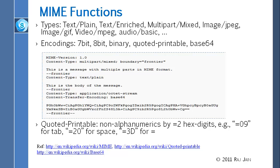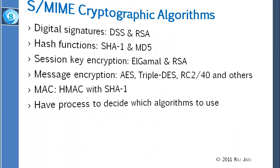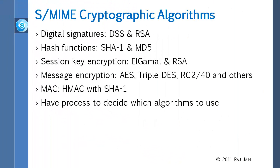Many of you have saved webpages as MHTML. MHTML is basically MIME-encoded HTML. If you open an MHTML document, it is all readable text, but it has a lot of equals signs — that's the quoted printable encoding.